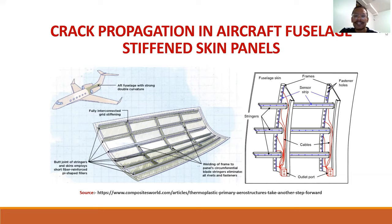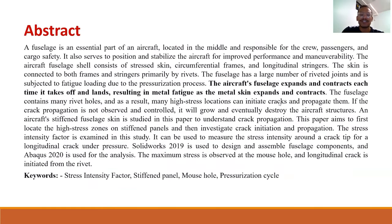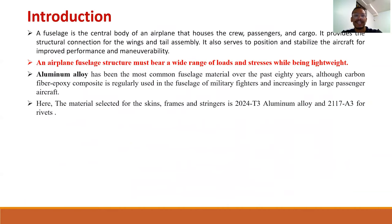A fuselage is an essential part of the aircraft which is responsible for the safety of passengers and cargo. It serves to position and stabilize the aircraft for improved performance and maneuverability. The aircraft fuselage consists of a compressed skin, longitudinal stringers, and circumferential frames. The skin is connected to both frames and stringers primarily by a series of rivets. An airplane fuselage structure must bear a wide range of loads and stresses while being lightweight. That's why aluminum alloy has been the most common fuselage material over the past 80 years.